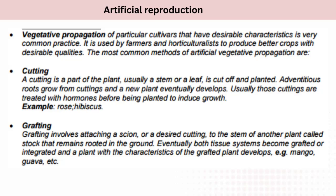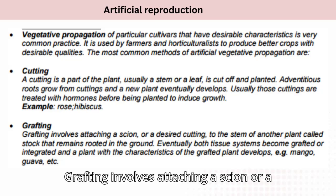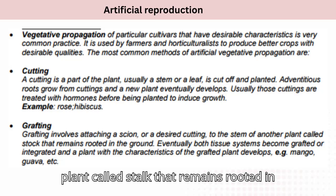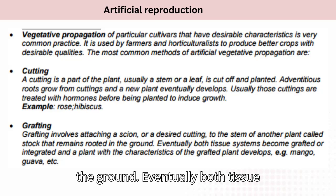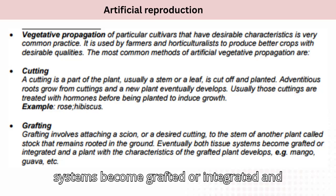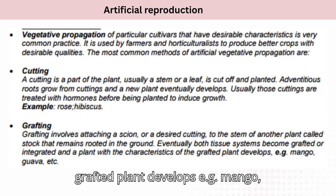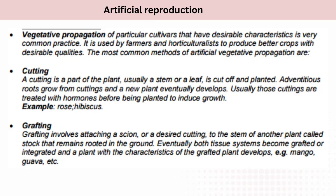Grafting: grafting involves attaching a scion, or desired cutting, to the stem of another plant called the stock, which remains rooted in the ground. Eventually both tissue systems become grafted or integrated, and a plant with the characteristics of the grafted plant develops. Examples: mango, guava.